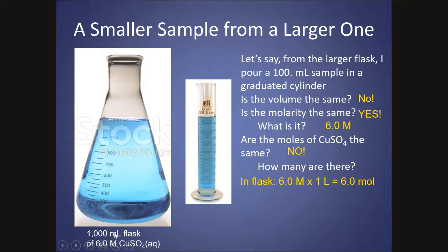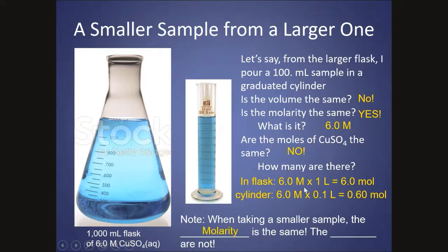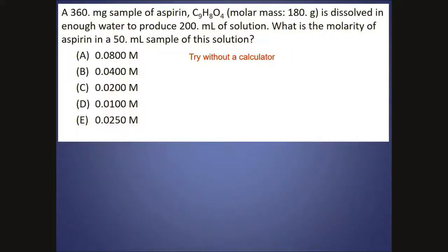So anytime you have volume and molarity, remember you have moles. So in the flask, I'd have 6 moles. In the cylinder, I'd have 0.6 moles. So when taking a smaller sample, the molarity is the same, but the moles are not.